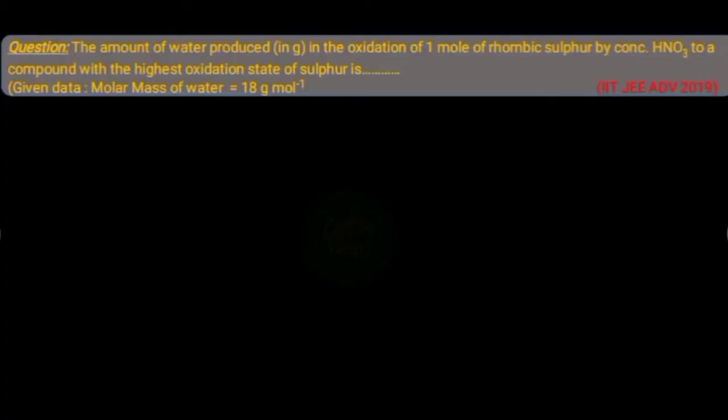Here the question states that when one mole of rhombic sulfur is treated with concentrated nitric acid, it gives a sulfur compound with the highest oxidation state of sulfur and water molecules as product. We have to find out the mass of water when only one mole of rhombic sulfur is reacted. This question is asked in IIT JEE Advanced 2019.